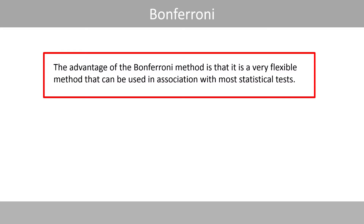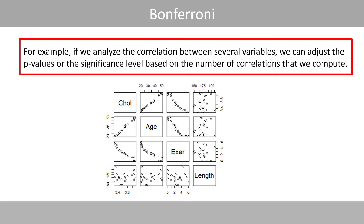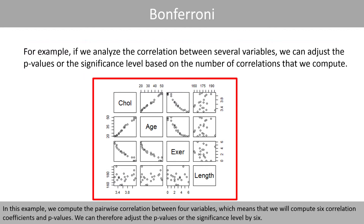However, the advantage of the Bonferroni method is that it is a very flexible method that can be used in association with most statistical tests. For example, if we analyze the correlation between several variables, we can adjust the p-values or the significance level based on the number of correlations that we compute. In this example, we compute the pairwise correlation between four variables, which means we will compute six correlation coefficients and p-values, so we can adjust by six.